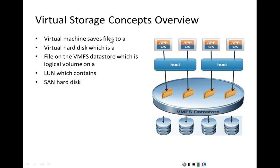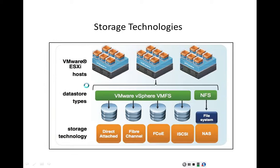Here's the overview, and then I will explain these components individually. A virtual machine saves files to a virtual hard disk, and a virtual hard disk is a single file which is stored on the VMFS datastore. The VMFS datastore is a logical volume located on a LUN — logical unit number — which is part of a disk array. That logical unit number contains the SAN hard disks in the disk array.